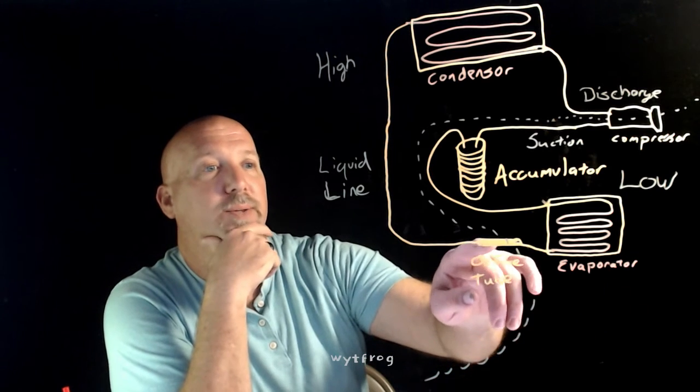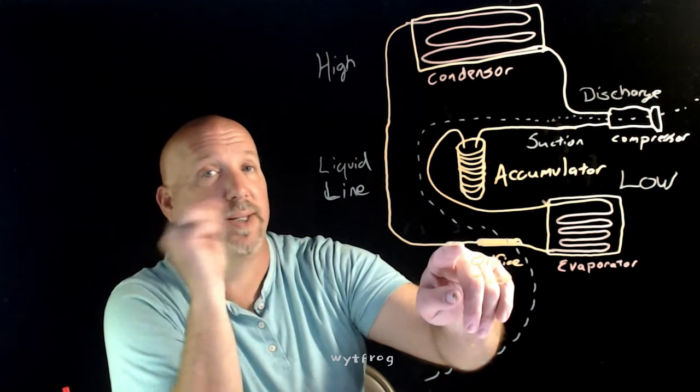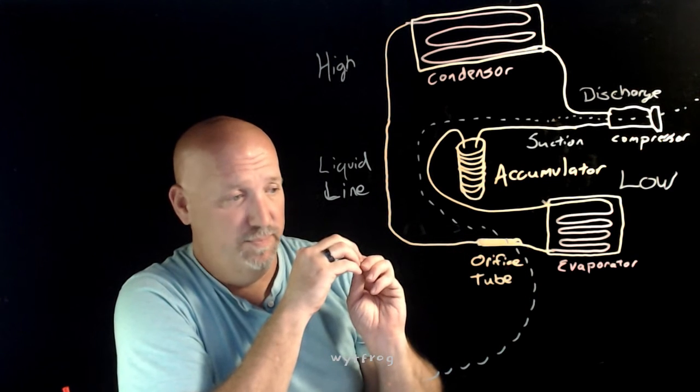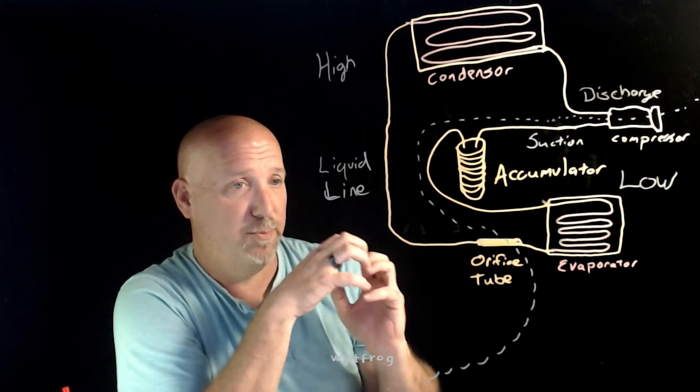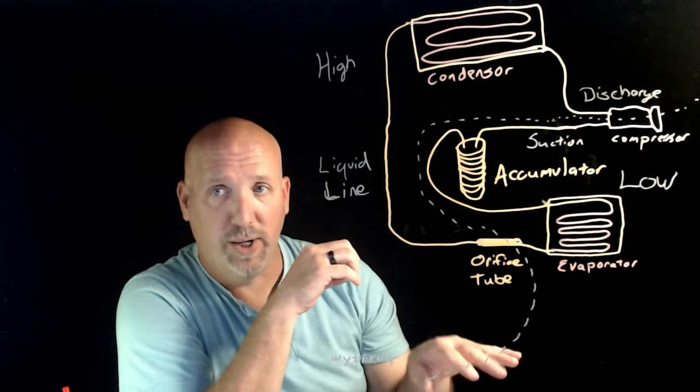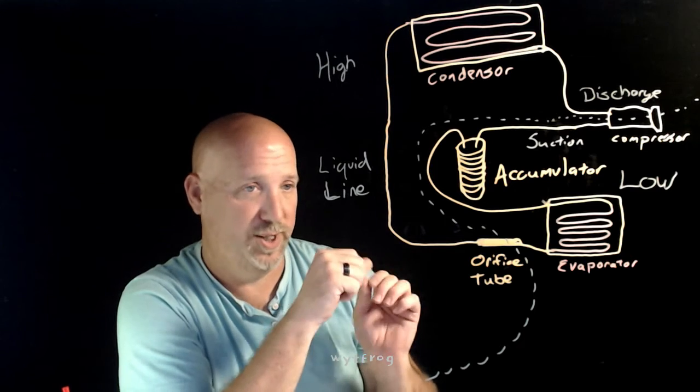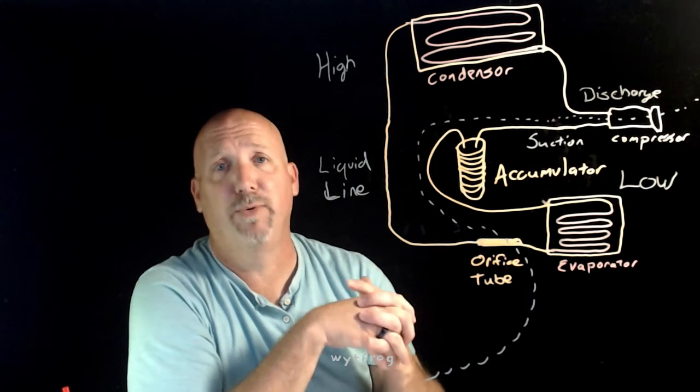As the high pressure condensed liquid refrigerant goes through the orifice tube, it is then split from a high pressure liquid to a low pressure liquid. And as it's sitting here being forced through the small orifice tube, it's going to have some vaporization that takes place as well.